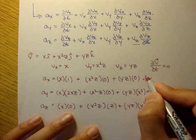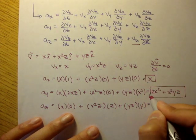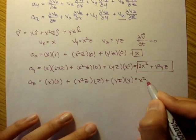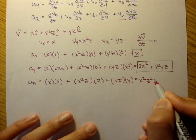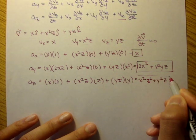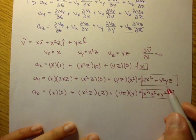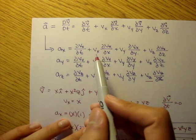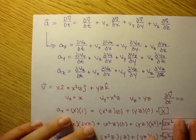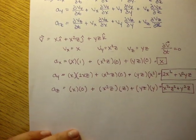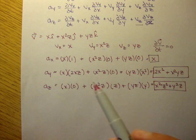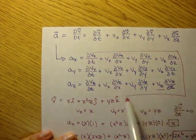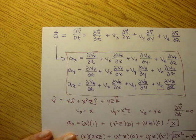So there you have it — the three components of the acceleration field depend on the three components of the velocity field, and we can find the three different acceleration field components using this formula.